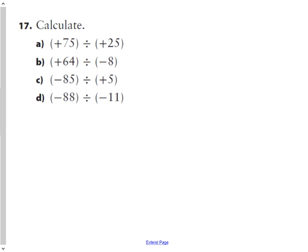Eight minutes left. Let's see if we can finish this. Calculate. How many 25s are there in 75? Three. How many 8s in 64? Here's a tough one. How many 5s in 85? I was going to be asking an easier one. How many 5s in 100? 20. How many less 5s do I need to get to 85 from 100? Three less than 20 is 17. How many 11s in 88? Eight. So we have our numbers down. Now we just have to determine the signs. Same signs, positive. Different signs, negative. Different signs, negative. Same signs, positive.